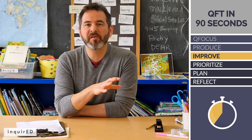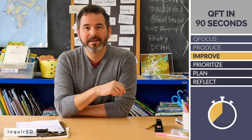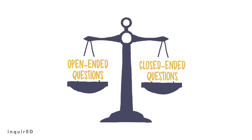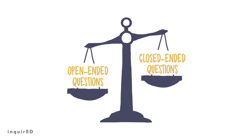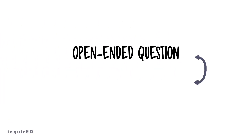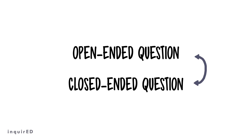Set your timer for another four to five minutes, then categorize questions into open and closed, labeling each with a C or an O. Next, discuss the advantages and disadvantages of both types of questions. Finally, change one open question to closed, and vice versa.